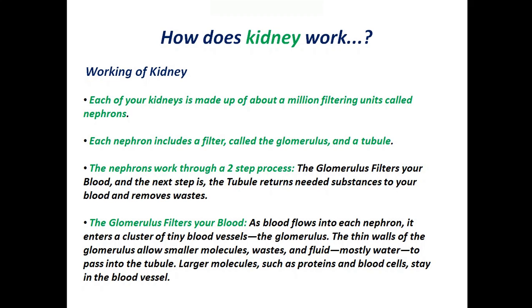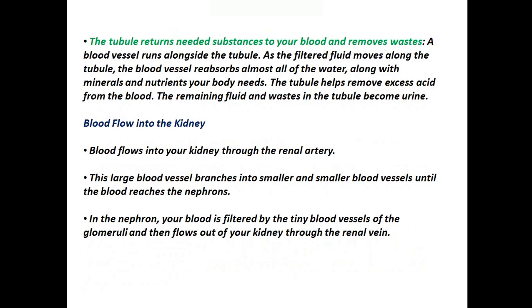Let's discuss the first step: the glomerulus filters your blood. As blood flows into each nephron, it enters a cluster of tiny blood vessels called the glomerulus. The thin walls of the glomerulus allow smaller molecules, wastes, and fluid — which is mostly water — to pass into the tubule. Larger molecules such as proteins and blood cells stay in the blood vessel. The next step is: the tubule returns needed substances to your blood and removes wastes.